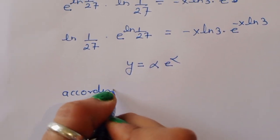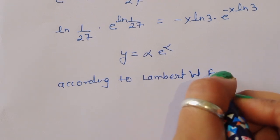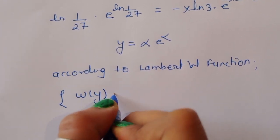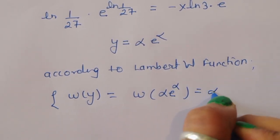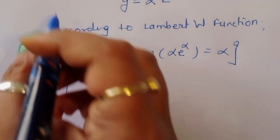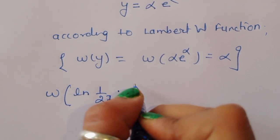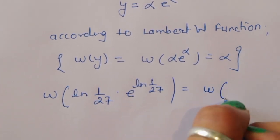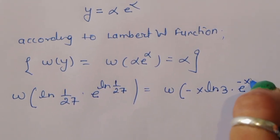According to the Lambert W function, W(α·e^α) = α. Applying W to both sides: W(ln(1/27) times e^(ln(1/27))) = W(minus x·ln3 times e^(-x·ln3)). Therefore ln(1/27) = minus x·ln3.